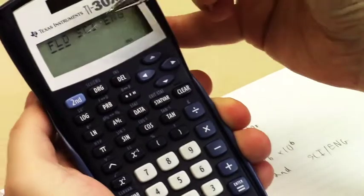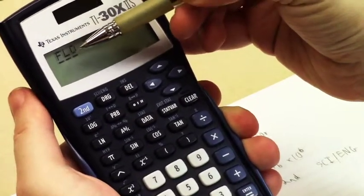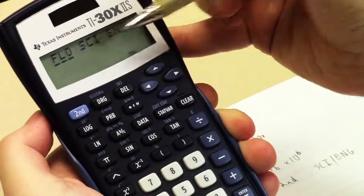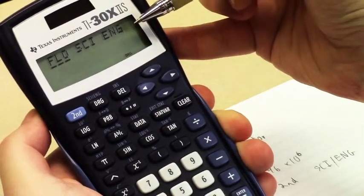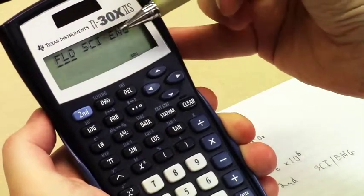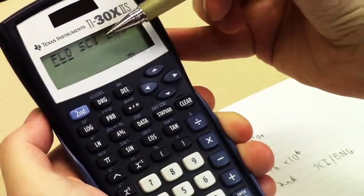And in this menu, it gives you three different options. There's FLO, which stands for floating point, SCI, which stands for scientific notation, and ENG, which stands for engineering mode. You're probably never going to use engineering mode, but we are going to be using scientific notation mode.